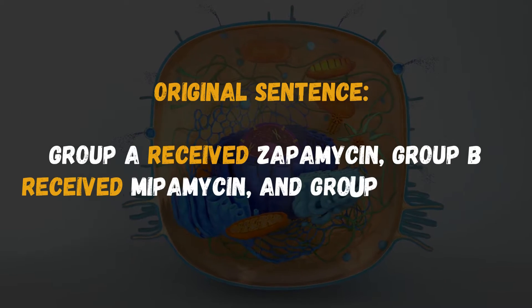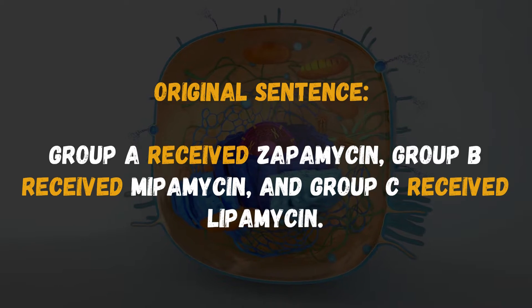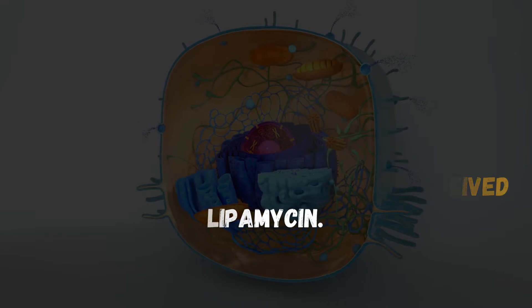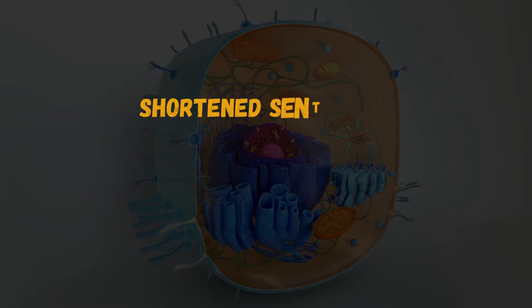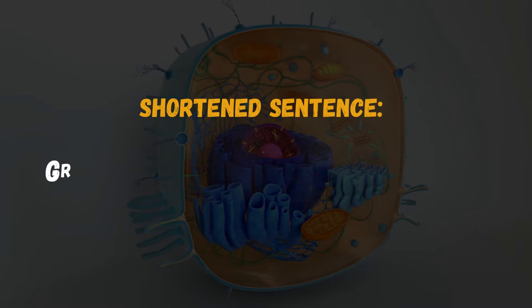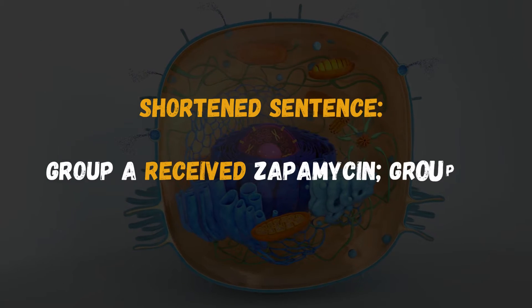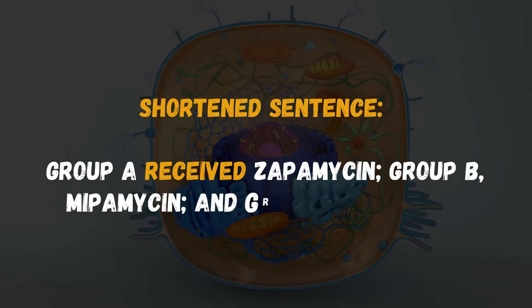So let's say you are writing a research report on how various groups of patients received antibiotics. See how I have shortened this sentence with an elliptical construction, by minimizing the usage of the word 'received.'